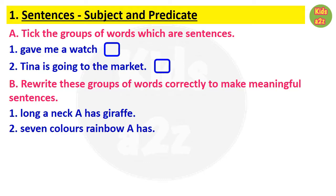The first one is not a sentence because it does not start with a capital letter and there is no full stop. The second one, 'Tina is going to the market,' follows all the rules, so it is a sentence. Now question B: rewrite these groups of words to make meaningful sentences.